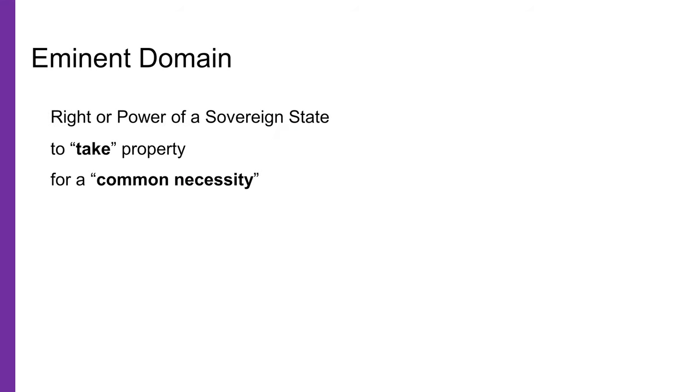Let us go through them one by one. This power of the state to impose upon and curtail is called the concept of eminent domain. Eminent domain is the right or power of a sovereign state to take private property for public use. It is an inherent political right of the state founded on common necessity. The concept that legitimizes such a power of the state is called public purpose.